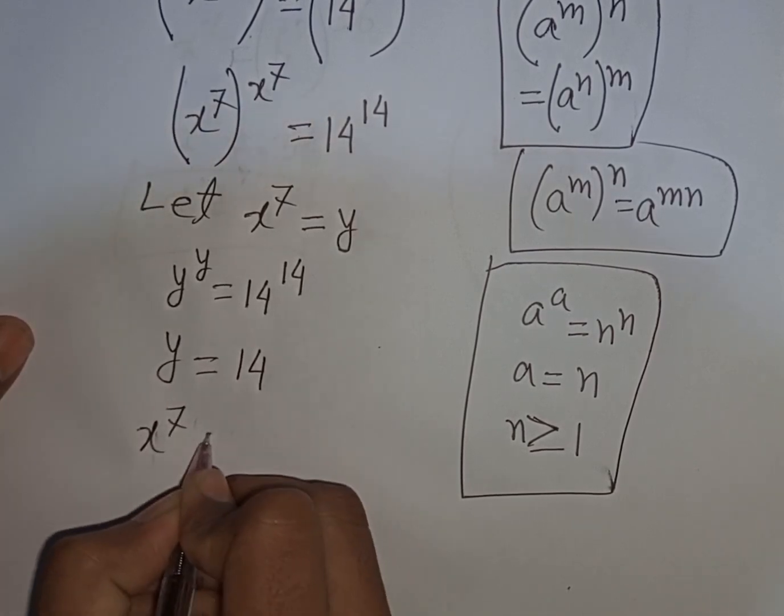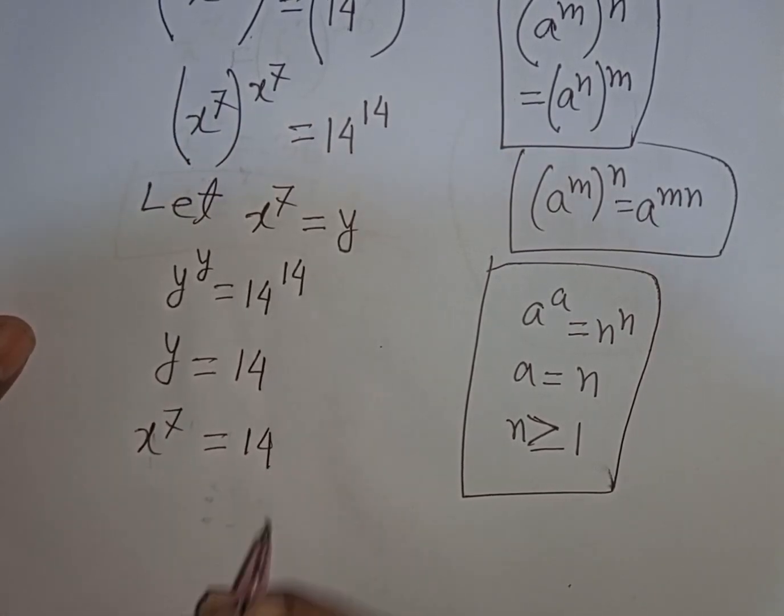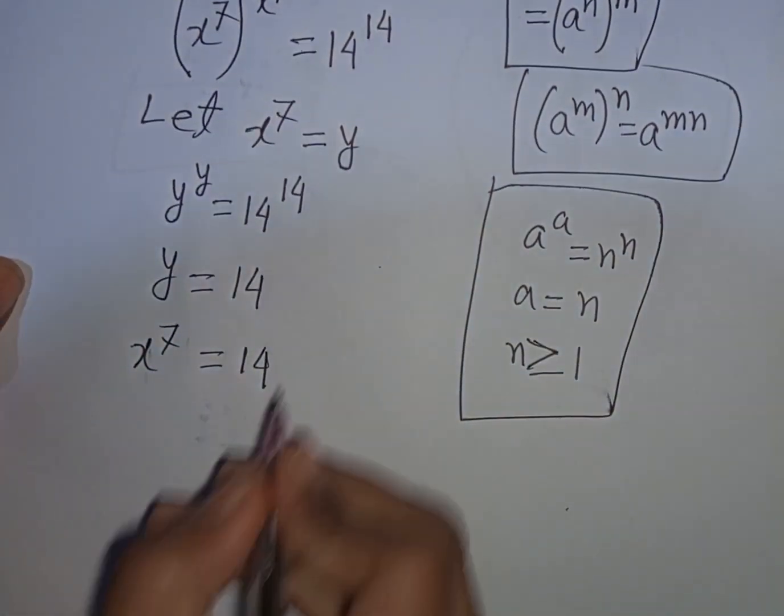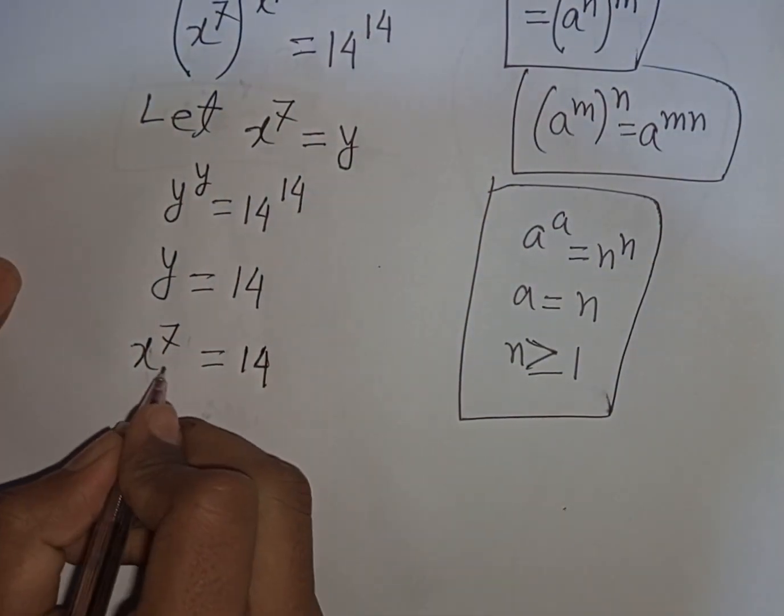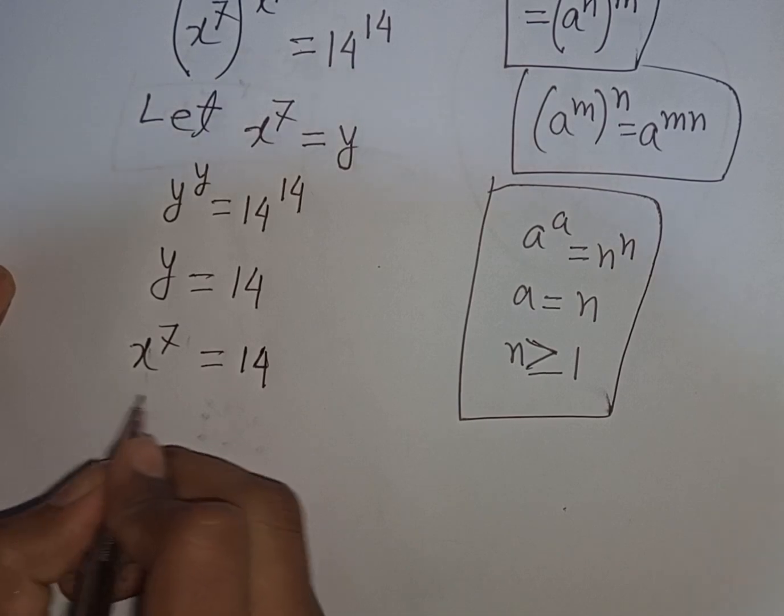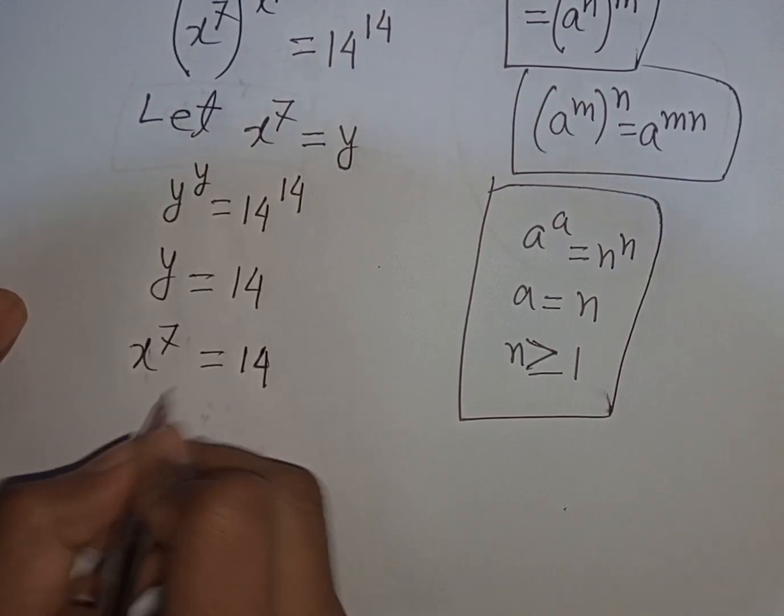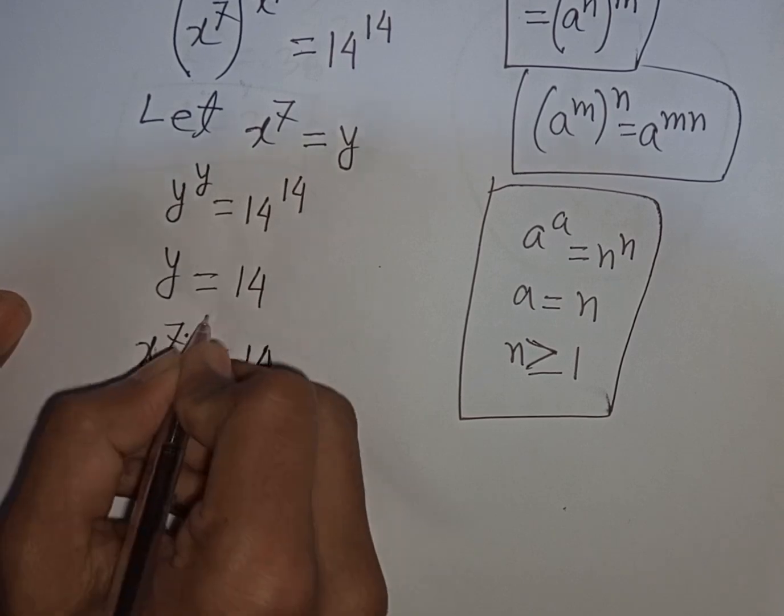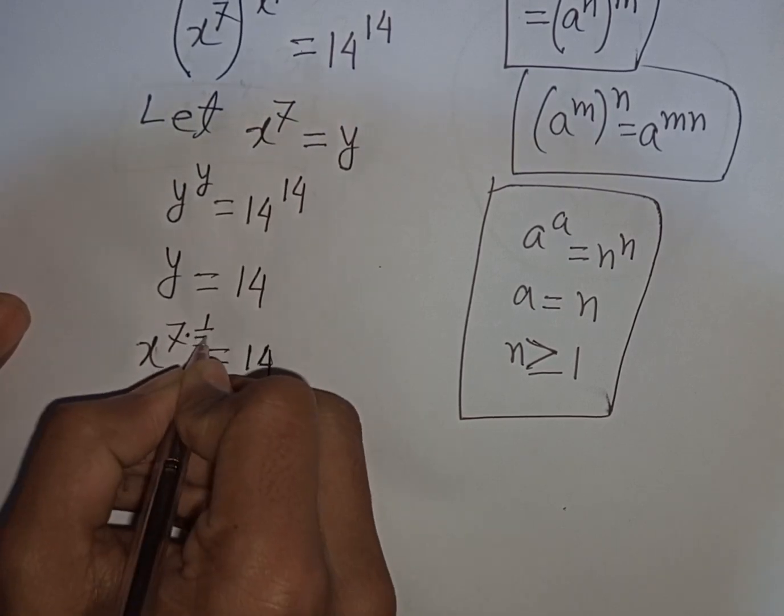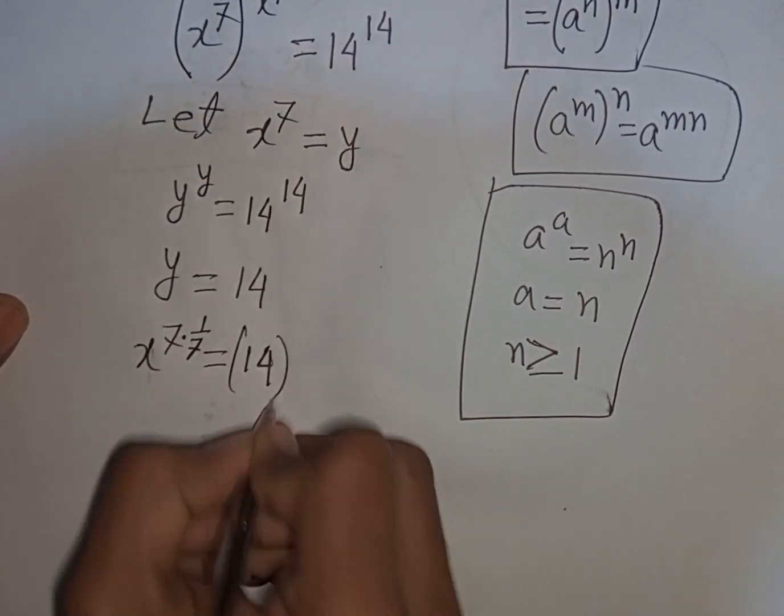Now we need the value of x, so we multiply by power of 1/7 on both sides. Multiply by power of 1/7 on both sides.